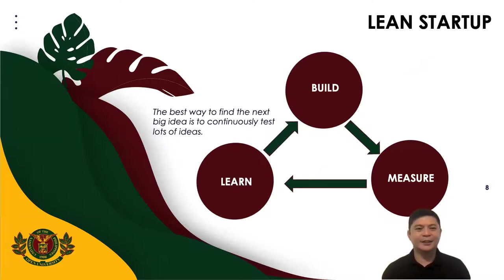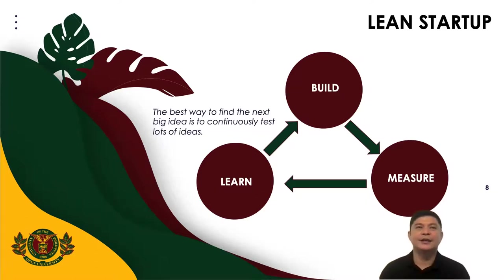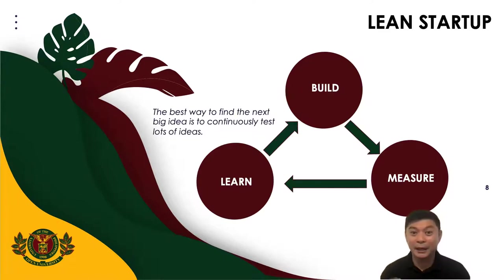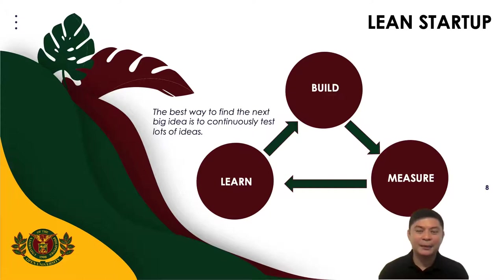We go to a different topic: how we can manage an idea into a sustainable business. Lean Startup is a principle that uses experimentation as a way to find the best business idea or the best solution for customer problems — and ultimately, the best business model that is sustainable. Lean Startup says the best way to find the next big idea is not just to think and declare it's the best, but to continuously test lots of ideas until you find the best one backed by data and customer feedback.